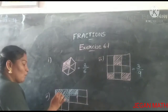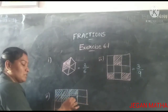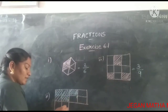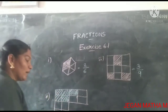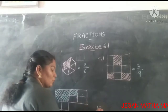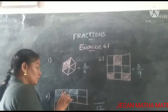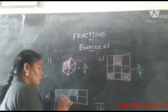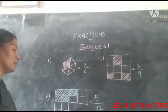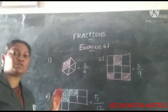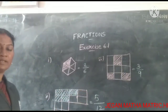Next figure: count the equal parts: 1, 2, 3, 4, 5, 6, 7, 8, 9, 10, 11, 12 — so 12 equal parts, denominator is 12. Count the shaded parts: 1, 2, 3, 4, 5. So the fraction of the shaded part is 5 by 12.